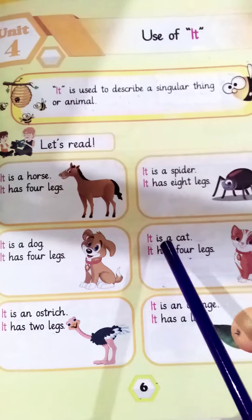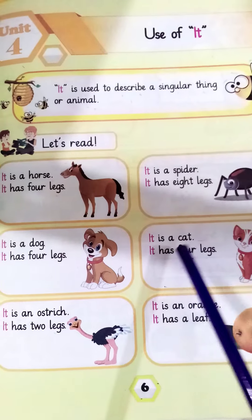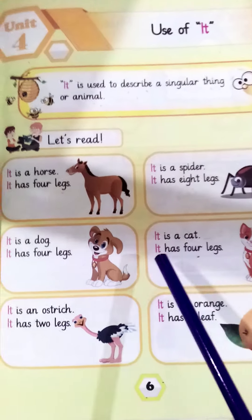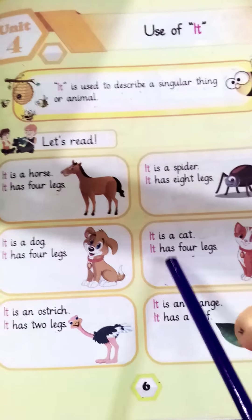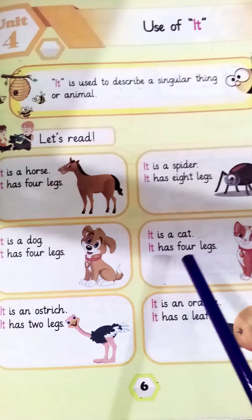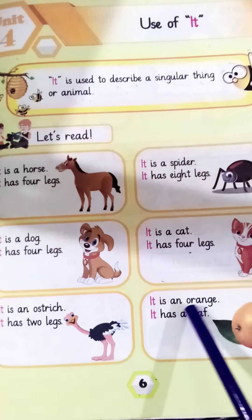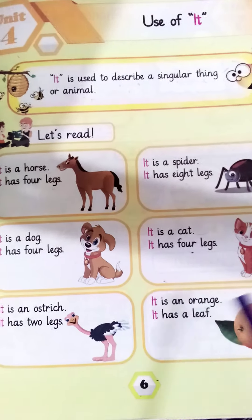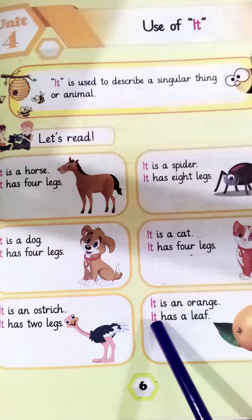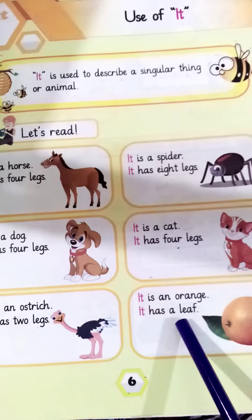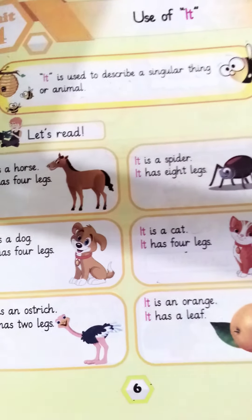It is a cat. It has 4 legs. It is an orange. It has a leaf.